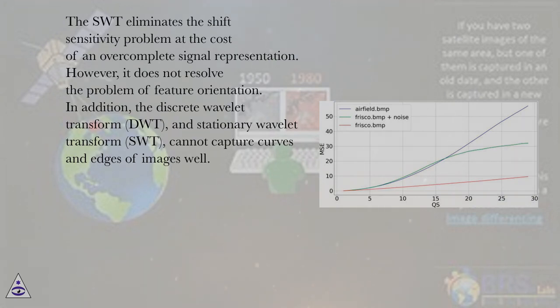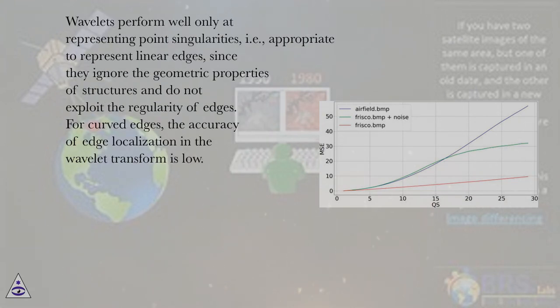However, it does not resolve the problem of feature orientation. In addition, the Discrete Wavelet Transform (DWT) and Stationary Wavelet Transform (SWT) cannot capture curves and edges of images well. Wavelets perform well only at representing point singularities, i.e., appropriate to represent linear edges.